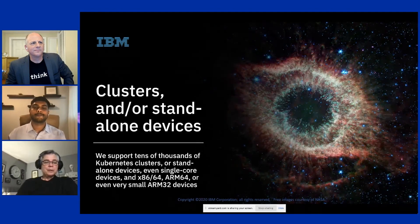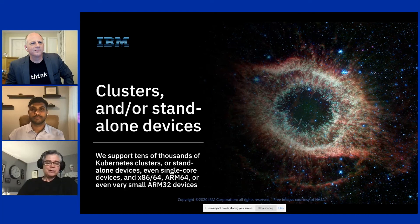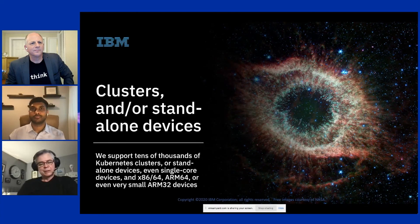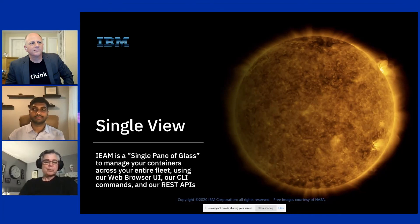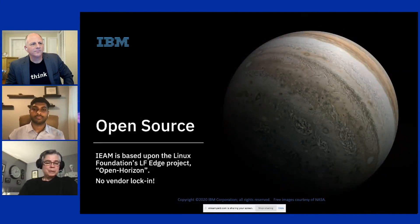We support large numbers of devices — tens of thousands of clusters or standalone devices — including small devices like single-core x86-64, ARM64, or even very small ARM32 devices as tiny as ARM32v6, like a Pi Zero. We provide a single pane of glass for managing all of that. You can use our web browser UI, which is a feature we add on top of the Open Horizon open source, as well as CLI commands. Everything is driven by REST APIs under the hood. It's all based on the Linux Foundation LF Edge project called Open Horizon, so there's no vendor lock-in.